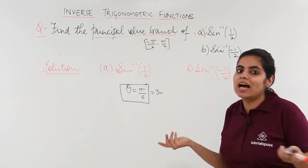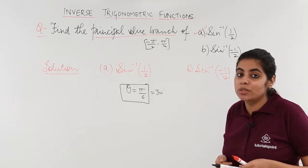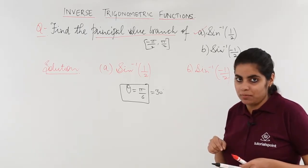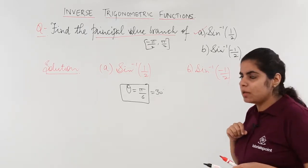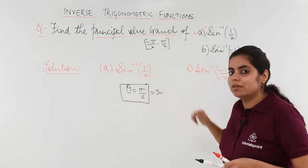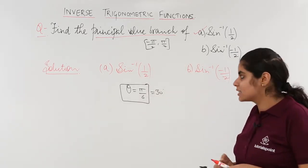So, what angle has its sine as minus 1 by 2? It is minus pi by 6. Does minus pi by 6 lie in the principal value branch? Yes, it does.